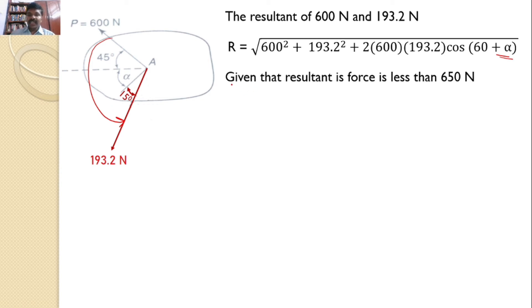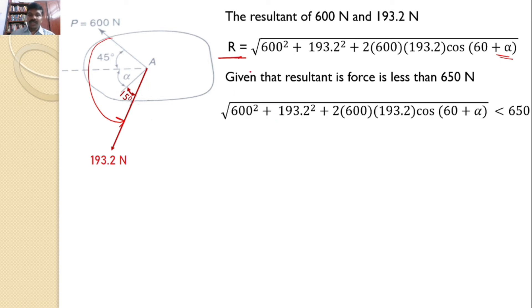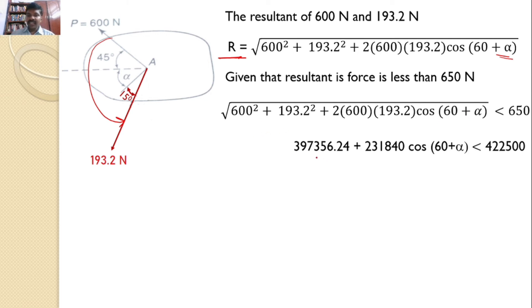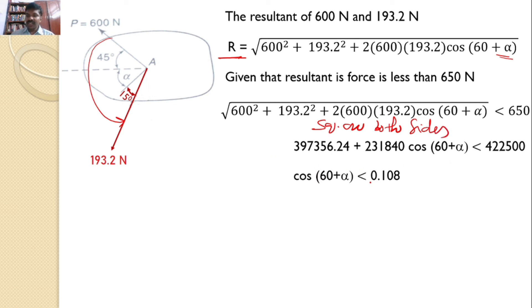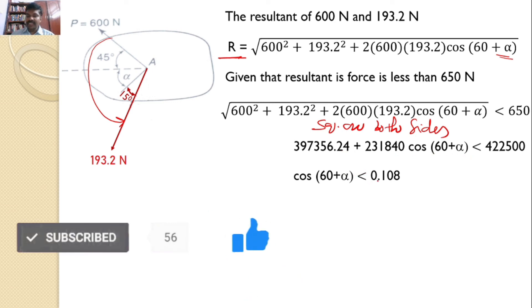Given that the resultant force must be less than 650 newtons, we set up: √(600² + 139.2² + 2×600×139.2×cos(60 + α)) < 650. Squaring both sides gives: 397,356.24 + 231,840·cos(60 + α) < 422,500. Simplifying further, cos(60 + α) must be less than 0.108.